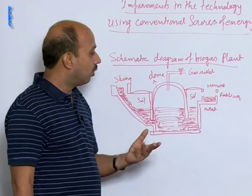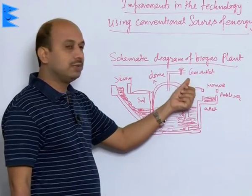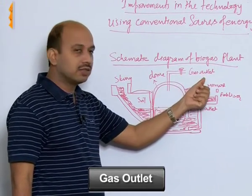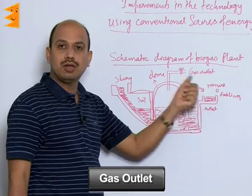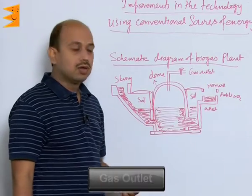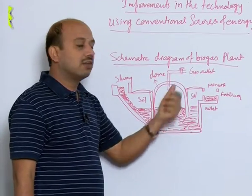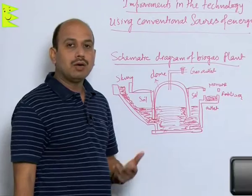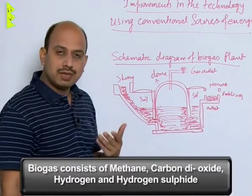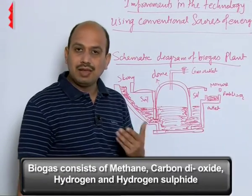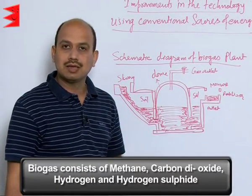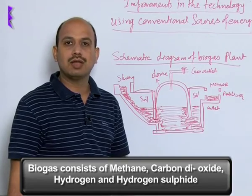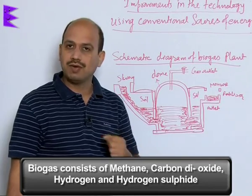This biogas can be taken through this valve outside — this is the gas outlet. The gas taken here is known as biogas. Biogas mainly consists of methane, carbon dioxide, hydrogen, and hydrogen sulfide.